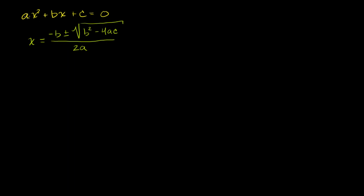And we learned how to use it. You literally just substitute the numbers a for a, b for b, c for c, and then it gives you two answers, because you have a plus or a minus right there. What I want to do in this video is actually prove it to you, prove that using essentially completing the square, I can get from that to that right over there.